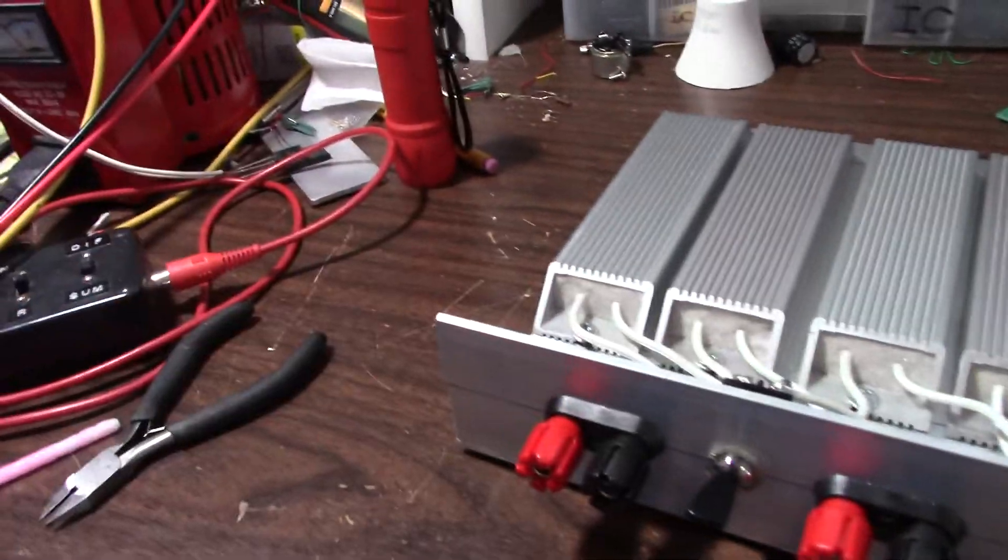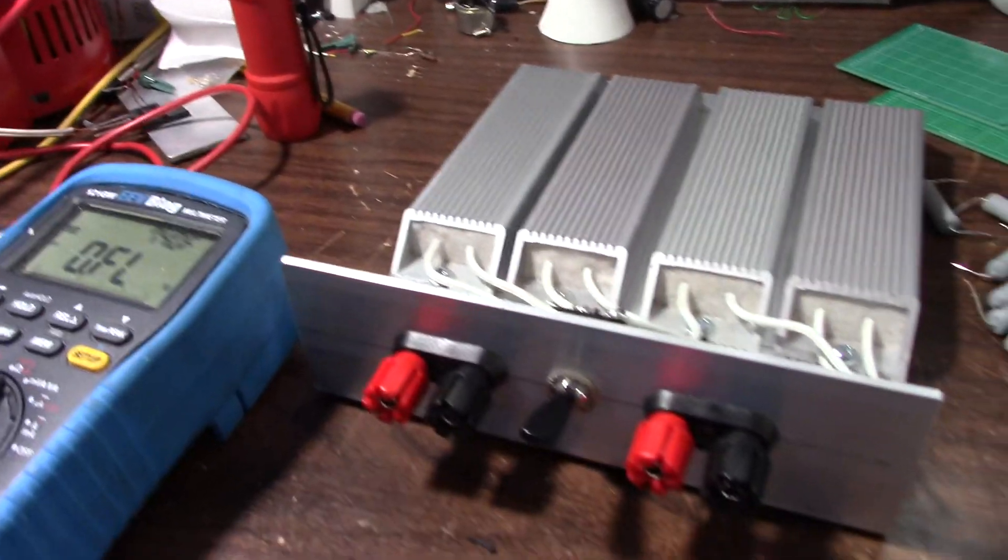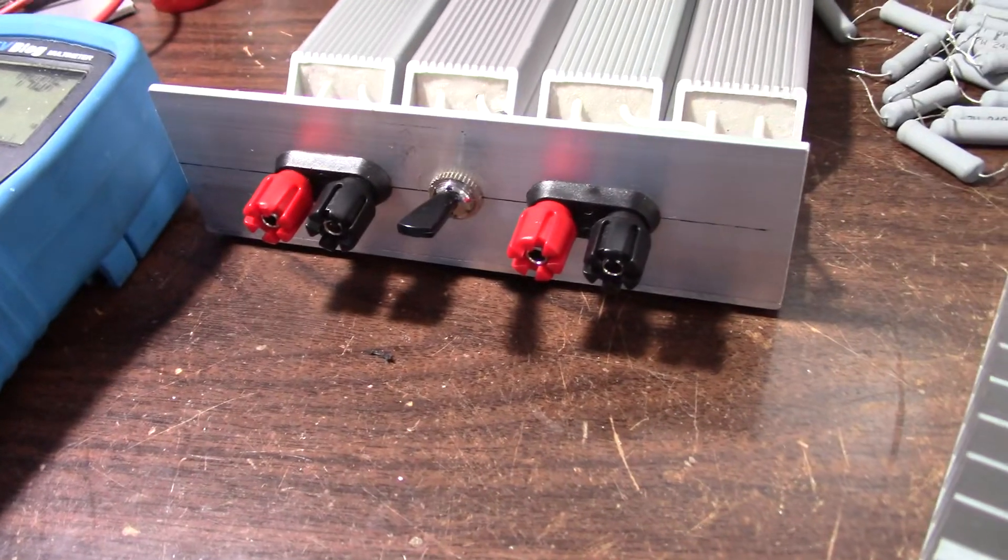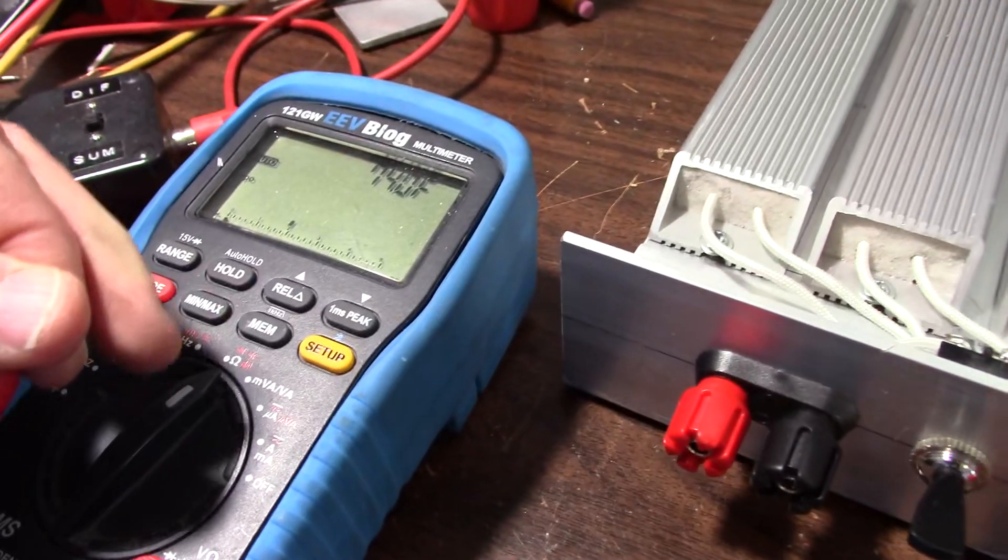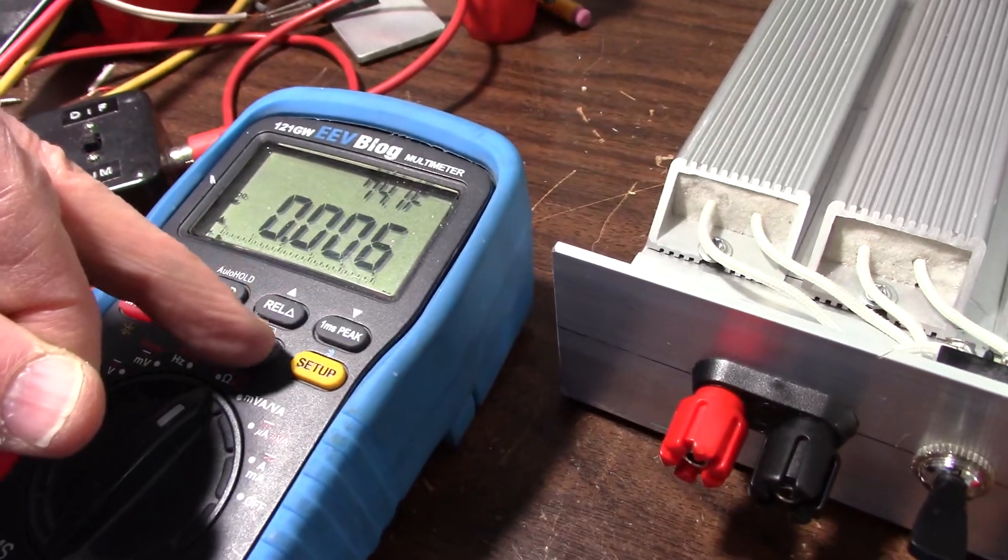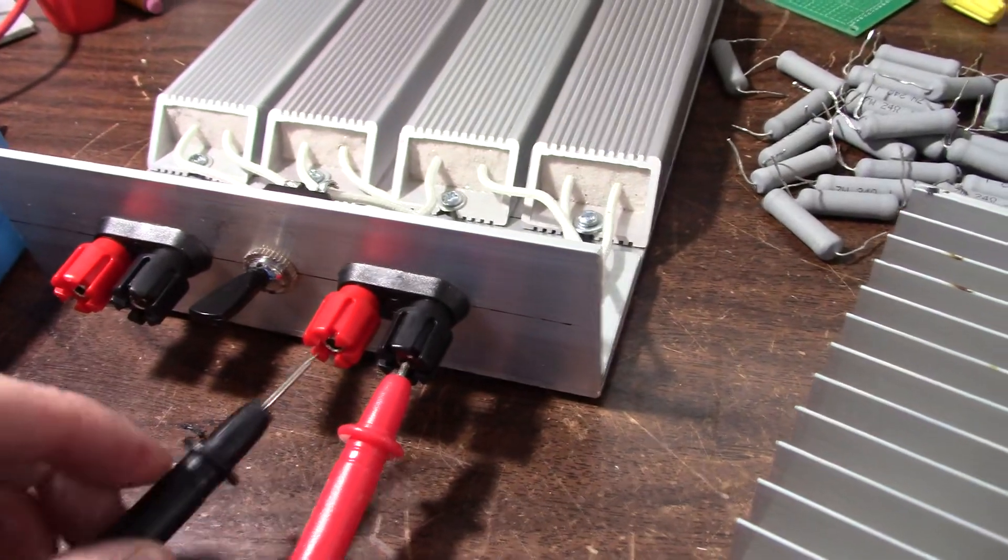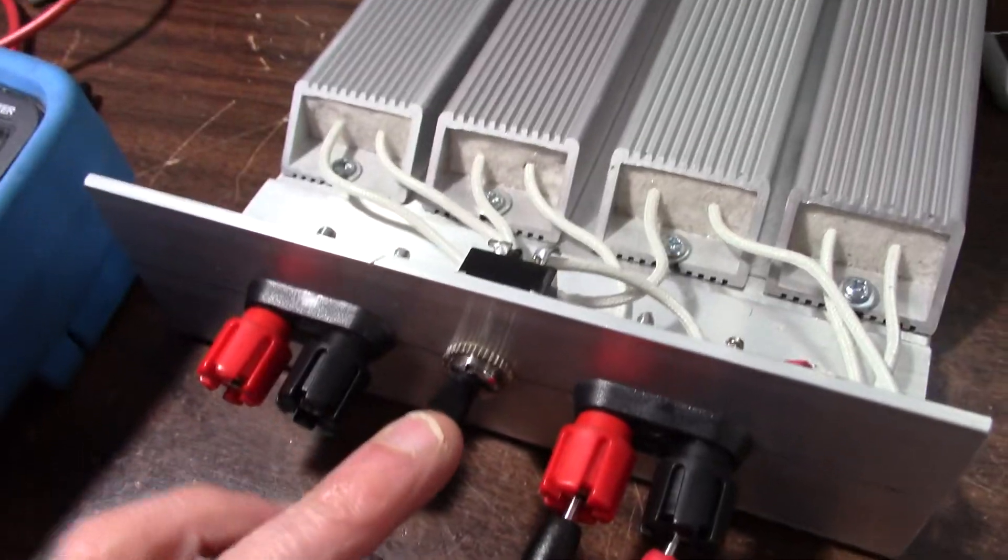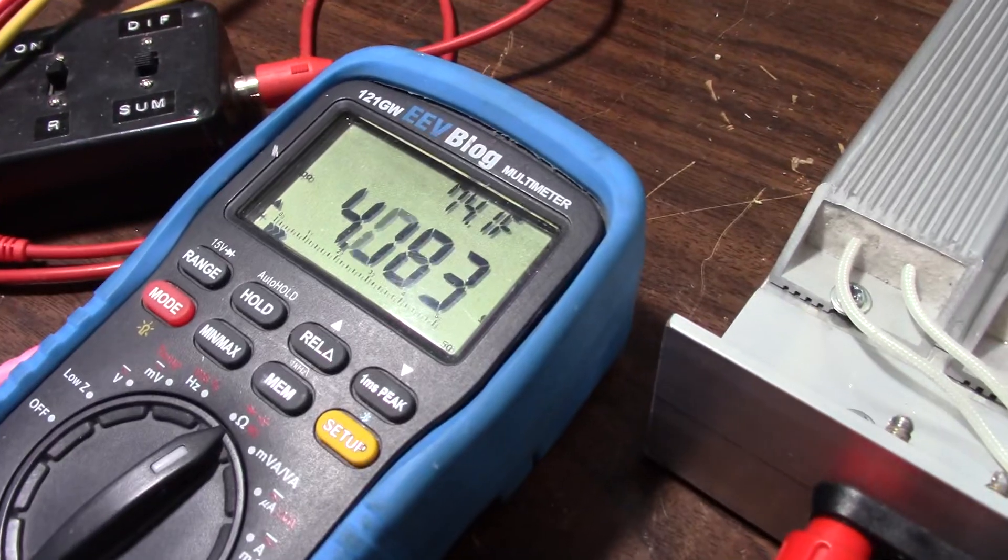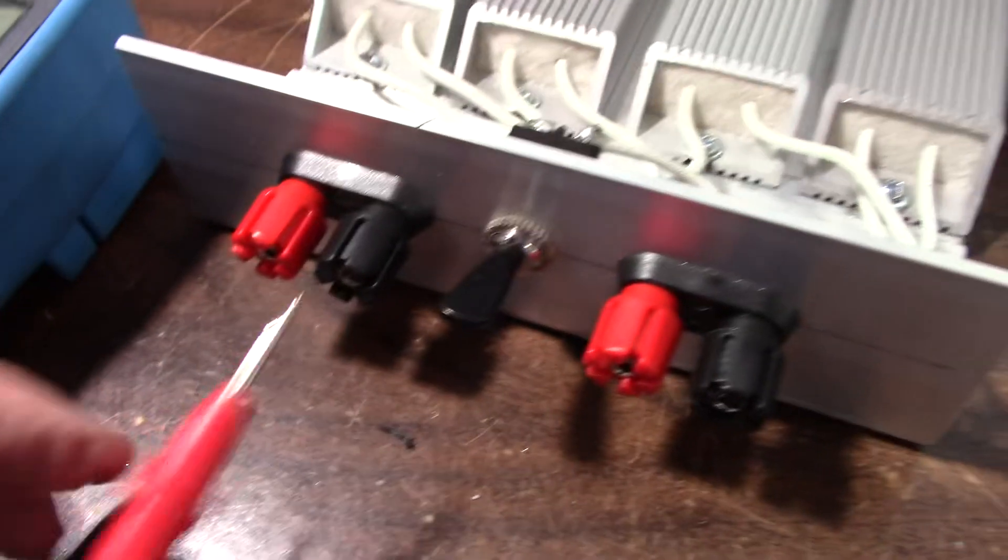So let me fire up the meter here. I'm going to do this one handed. Let me short the probes and zero out the meter. How to do things with one hand. Okay. So pop this in. 8 ohms up, 4 ohms down. On the other side here, 4 ohms down, 8 ohms up. Awesome.